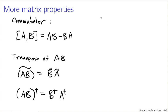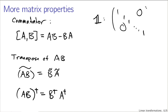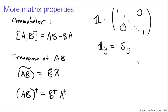Just to clarify notation: we also have the identity matrix, which has ones down the main diagonal and zeros off the main diagonal. The ijth entry of the identity matrix is the Kronecker delta, which we learned about earlier when talking about orthogonality.